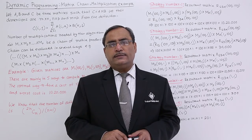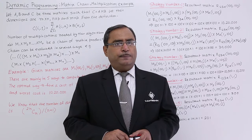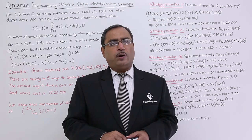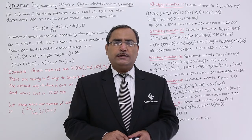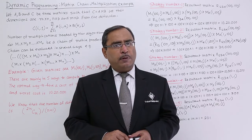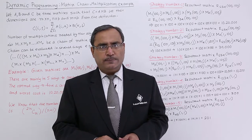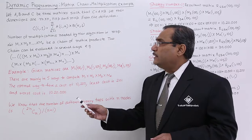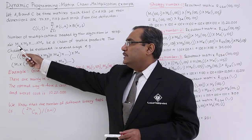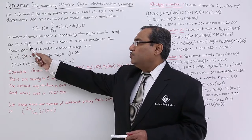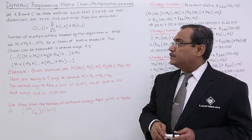In this session, we are discussing one example on matrix chain multiplication. In the previous video, we discussed what matrix chain multiplication is and how to calculate the complexity. Please watch the previous video to get the context. The product of multiplications M1 into M2 into ... into Mr is known as matrix chain multiplication.